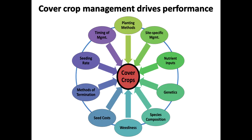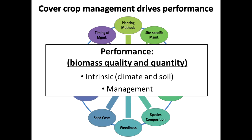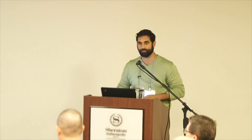This is a simple schematic — lots of different management factors affect cover crops. Planting methods, site-specific management, nutrient inputs, and cover crop genetics all affect the degree of performance. Performance has an intrinsic component driven by climate and soil, which sets the potential quality and quantity. Then management influences the degree to which you achieve the optimum. As we increase management intensity, cover crops do more for us in the landscape.